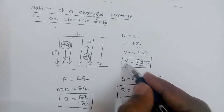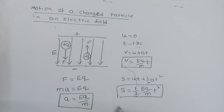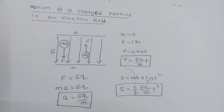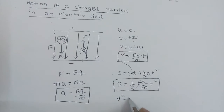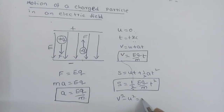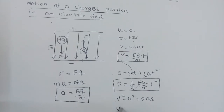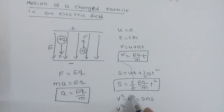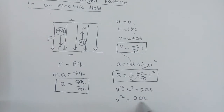To give the relation between velocity and displacement, we use the formula V² − U² = 2as. With U = 0, we get V² = 2 × (Eq/m) × s. This completes the motion equations for a charged particle initially at rest in an electric field.